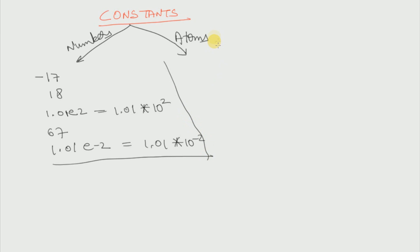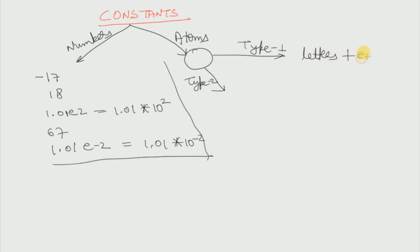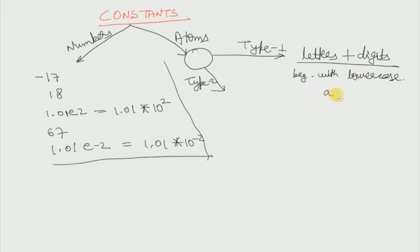Now we shall see atoms. Atoms can be further divided into two types: Type 1 and Type 2. Type 1 atoms contain letters plus digits, and the rule is they must start with a lowercase letter. For example, 'abhi' or 'dev' — these start with lowercase letters so they are Type 1 atoms.